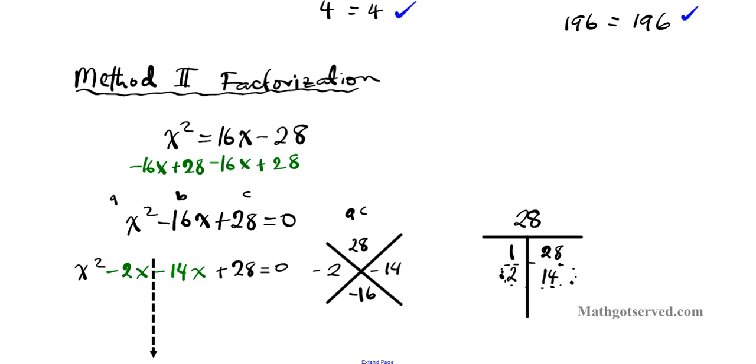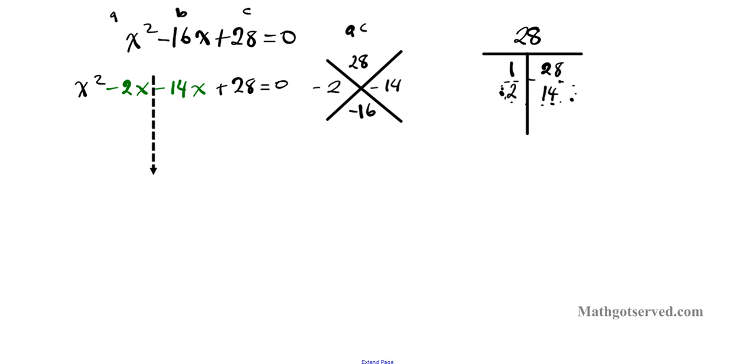From the first two, I can take out an x. x minus 2 is what you have left. And from these two, I can take out negative 14. I'm going to put x minus 2. And then you have x minus 2 and x minus 14. Now, when some people get to this step of factoring, they say, oh, the roots are negative 2 and 14. And guess what? They go ahead and select option number 1, negative 2 and negative 14. That's inaccurate.